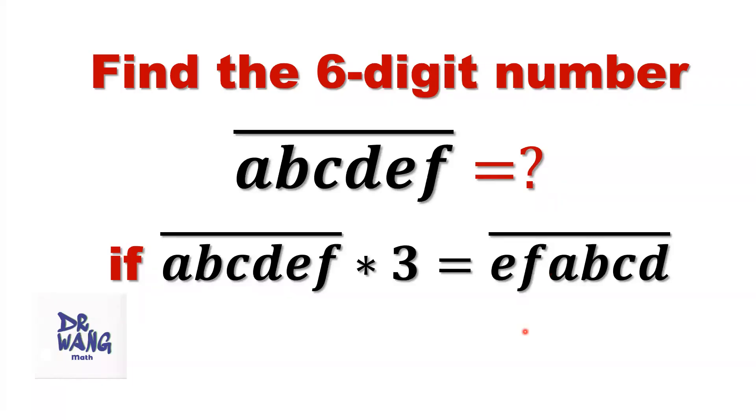Hello everyone, I'm Dr. Wang. Here I ask the question. Find the six-digit number abcdef if abcdef times 3 equals efabcd. So this six-digit number has this kind of property. If we swap the last two digits to the first, the new number will be three times the original number.